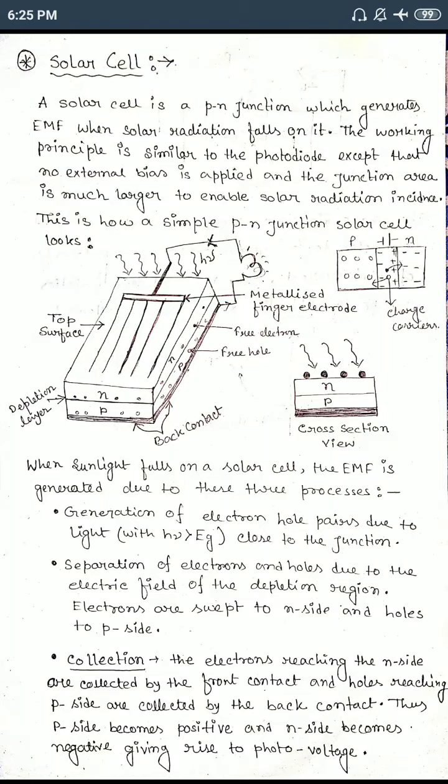And the junction area is much larger to enable solar radiation incidence. The area of the solar cell — as you see in this figure — the thickness and the area of the solar cell will be larger compared to the other diodes. This is all about the solar cell — how it is constituted and what is the working principle of the solar cell.